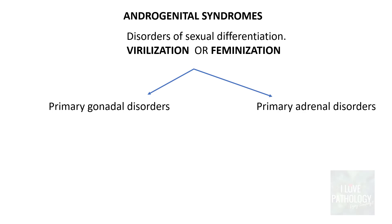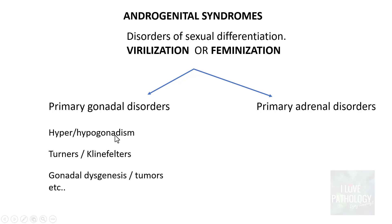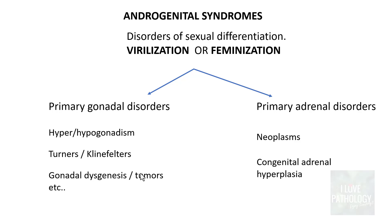These disorders of sexual differentiation can be either primary gonadal disorders or primary adrenal disorders, since androgens can be synthesized both by gonads and the adrenal gland. Primary gonadal disorders include hyper- or hypogonadism, Turner's or Klinefelter's syndrome, gonadal dysgenesis, ovarian tumors, and testicular tumors. Primary adrenal disorders can be either neoplasms or congenital adrenal hyperplasia. Among neoplasms, carcinoma is more commonly implicated in excess androgen production compared to benign neoplasms.